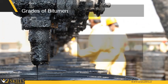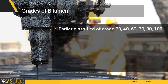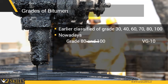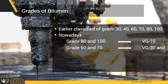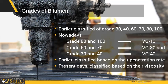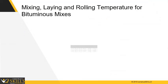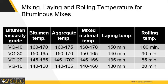The bitumen grades are grouped differently. Earlier, they were classified as grades 30, 40, 60, 70, 80, and 100, based on penetration tests. Recently, grades 80 and 100 have been converted to VG10, grades 60 and 70 to VG30, and grades 30 and 40 to VG40. VG stands for viscosity, and the numbers represent the viscosity of the bitumen. The table here shows the mixing, laying, and rolling temperatures for various bituminous mixes of different grades.